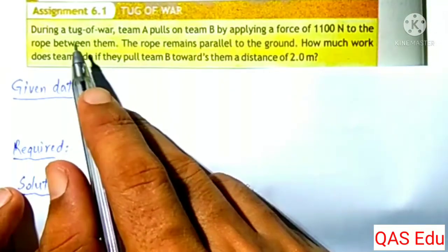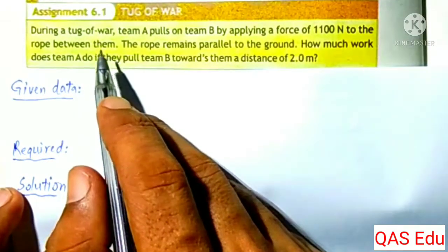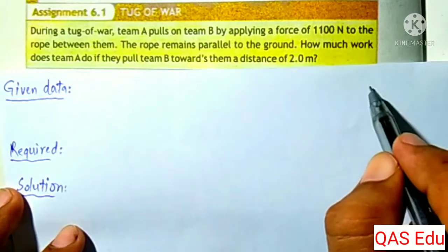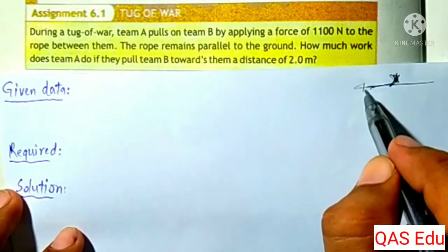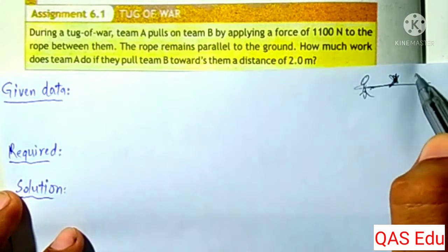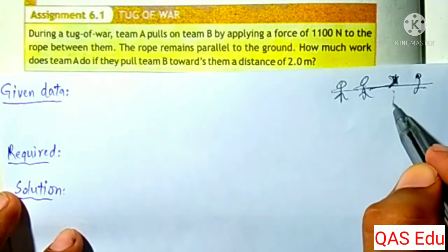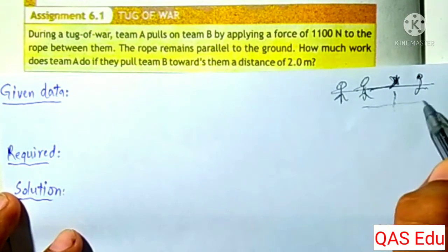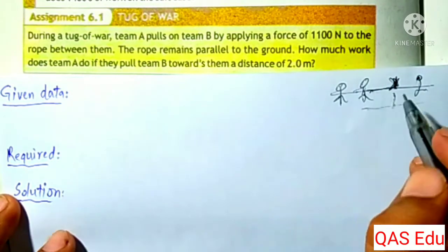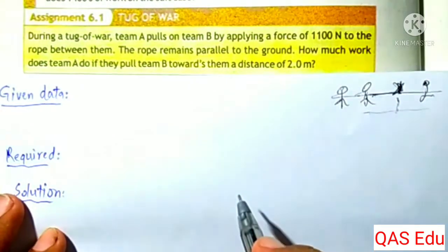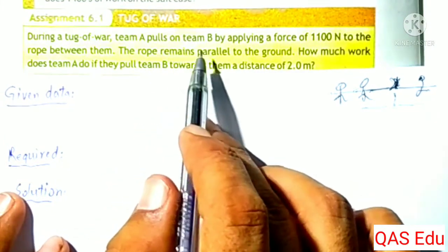Example 6.1, problem 7: During a tug of war game, there are two teams facing each other — the first team and the second team — pulling on a rope along the ground. Team A pulls on Team B.